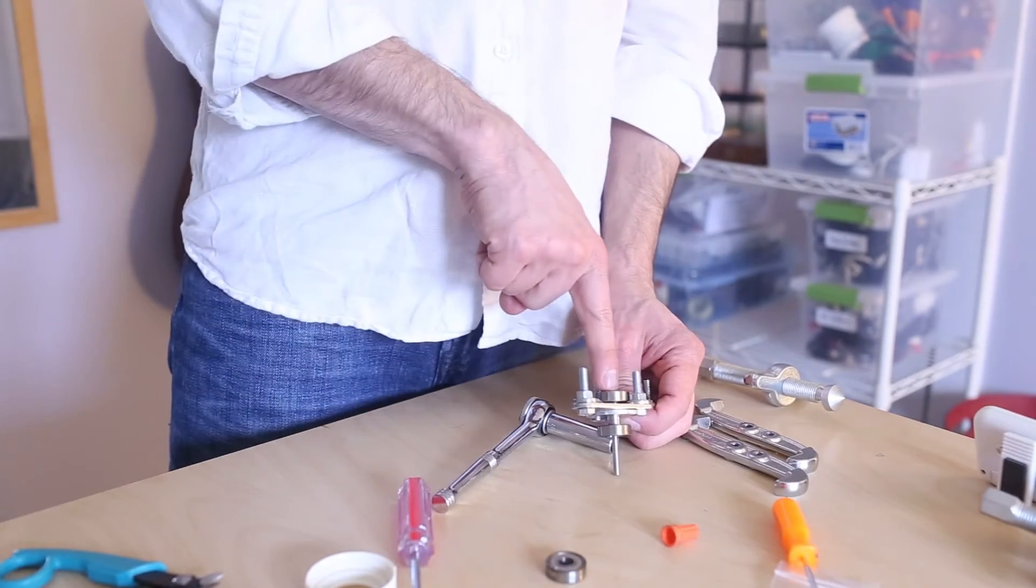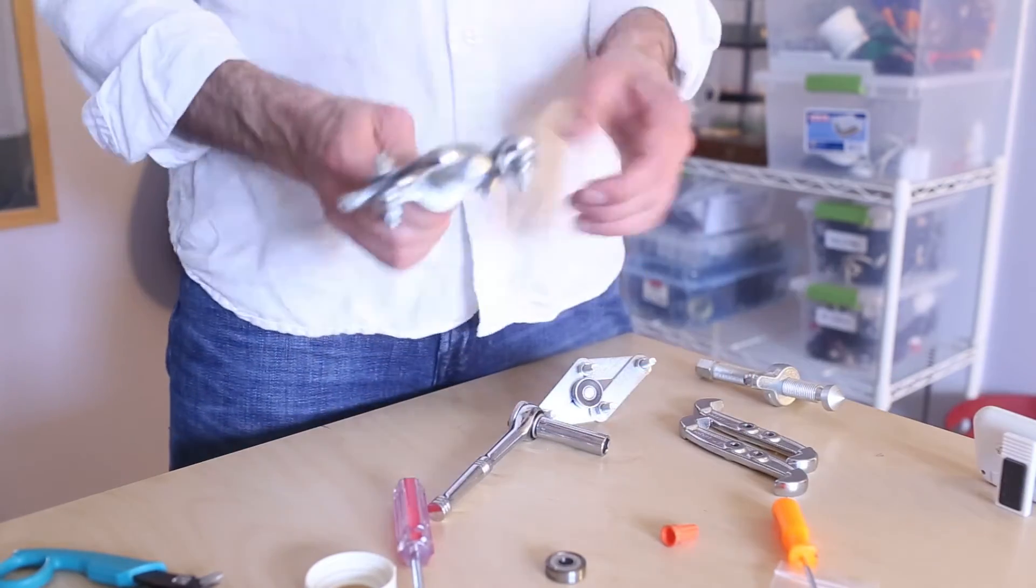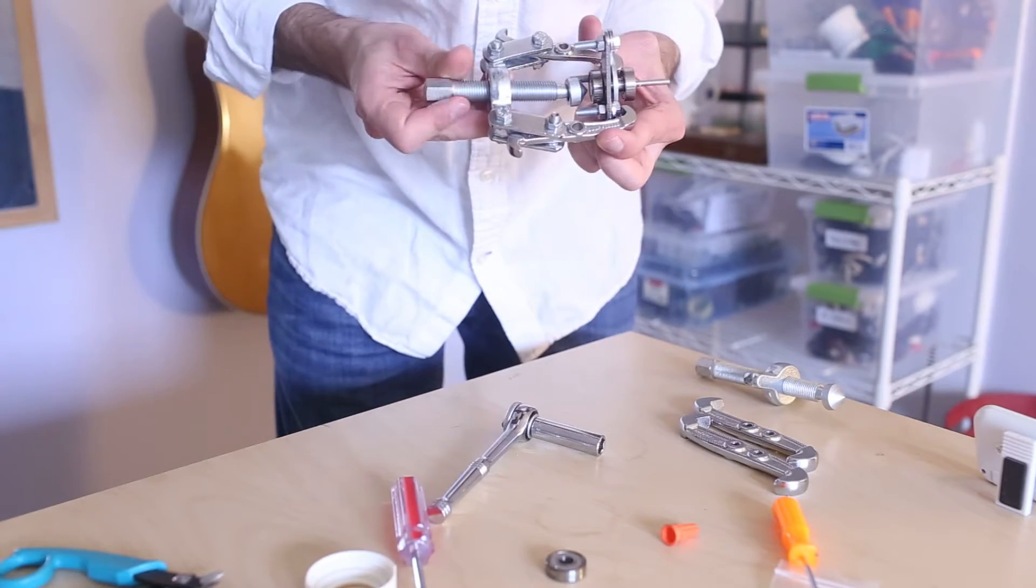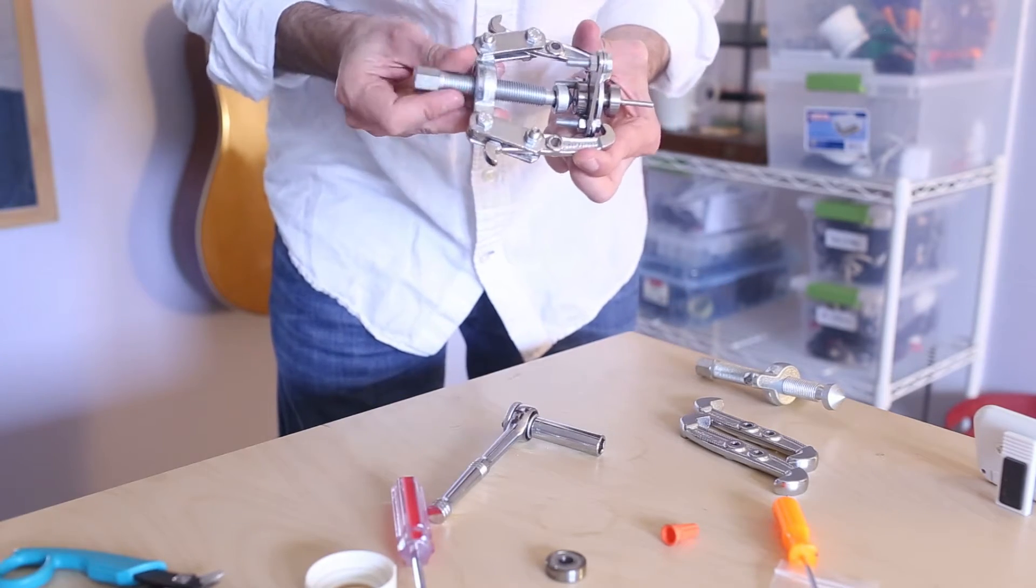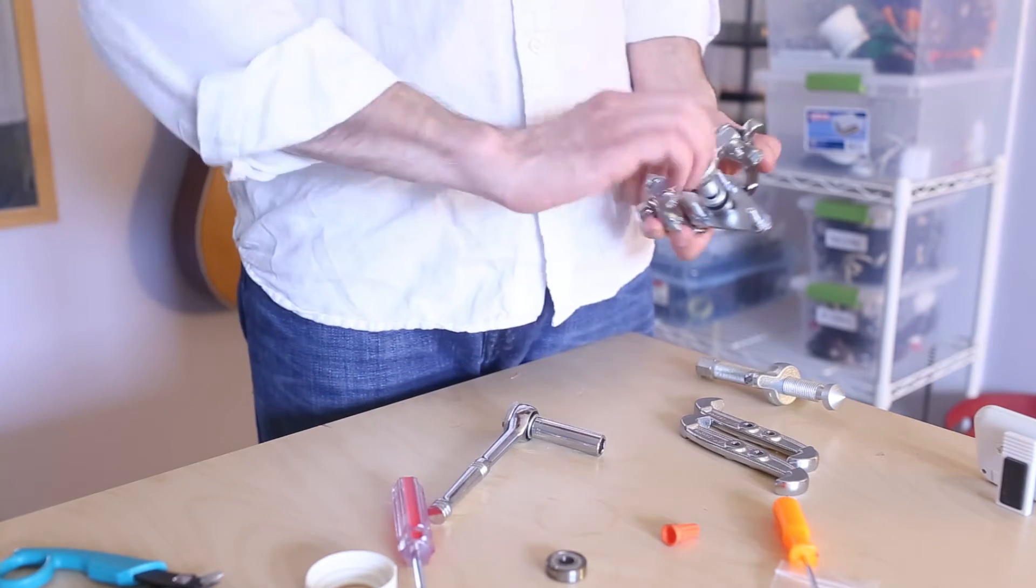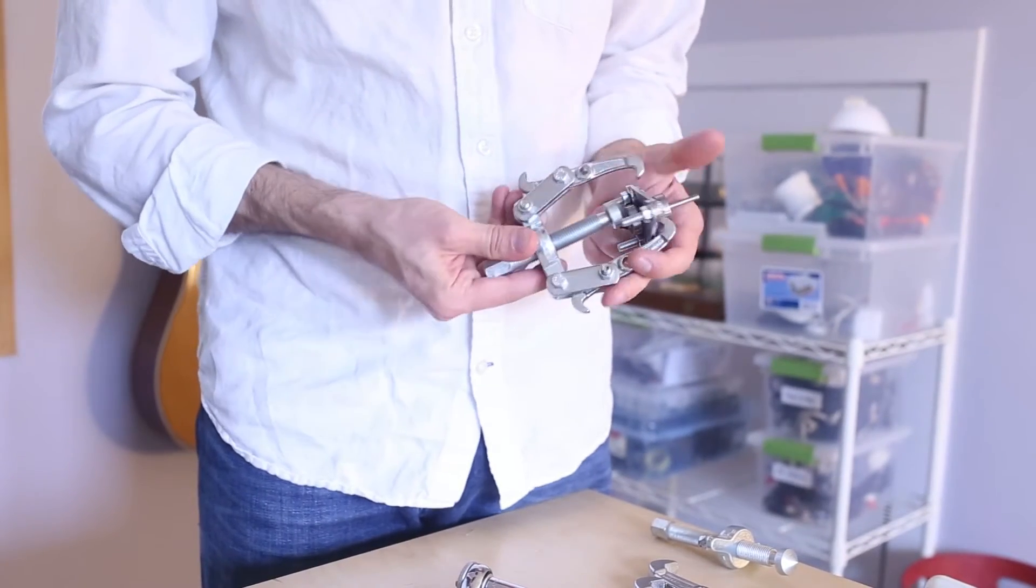There. So then if I push on the center of that shaft, it should pop out. So push on it with this thing. The other jaw puller. That should work. Usually you need a wrench, but I guess these snaps aren't very tight.